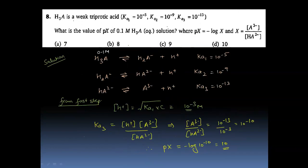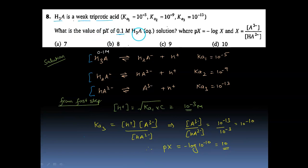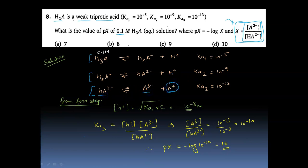Now here we have another important question on multi-stage dissociation of a polyprotic acid. H₃A is a weak triprotic acid that dissociates in three steps, with Ka1, Ka2, and Ka3 values given. We need to find Px, where x is a defined ratio involving species from Ka3, starting with 0.1 M H₃A. Writing the Ka1, Ka2, and Ka3 expressions, we see the ratio x appears in Ka3. We need to know [H⁺], which requires some approximations.